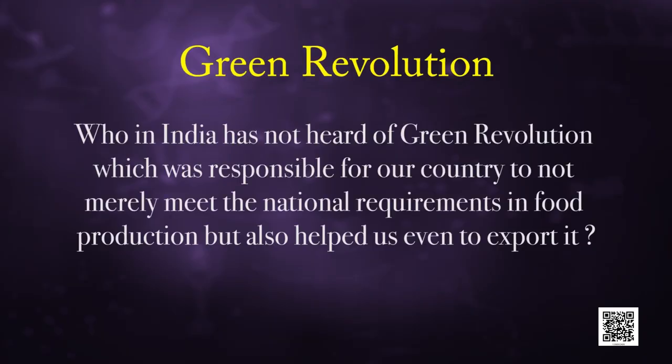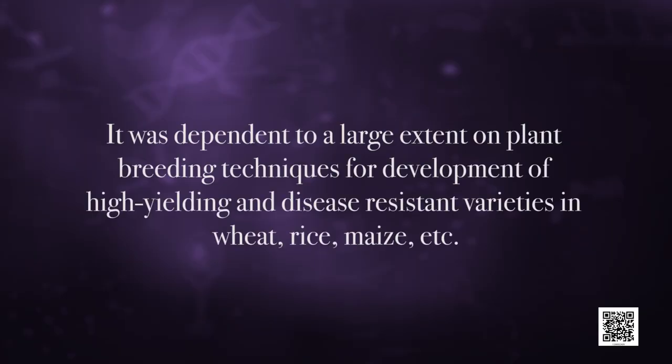The development of several high yielding varieties of wheat and rice in the mid-1960s as a result of various plant breeding techniques led to dramatic increase in food production in our country. This phase is often referred to as the green revolution, which was responsible for our country not merely meeting national food production requirements but also helping us export it. Green revolution in India was led by Dr. M.S. Swaminathan. It was dependent to a large extent on plant breeding techniques for the development of high yielding and disease resistant varieties in wheat, rice, maize, etc.